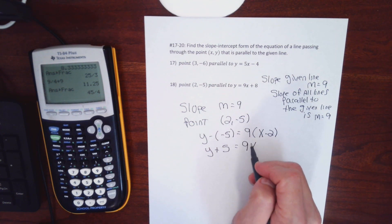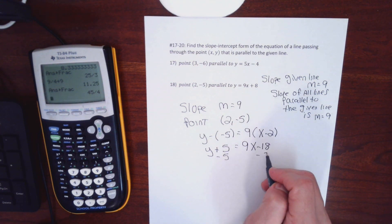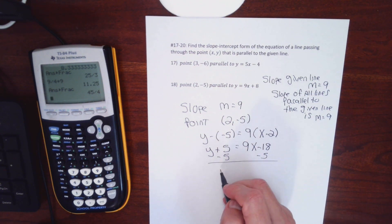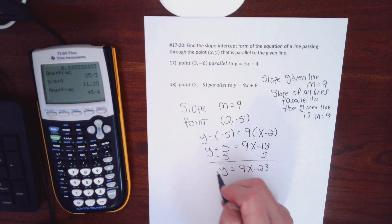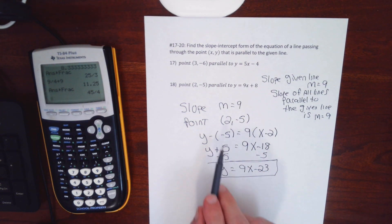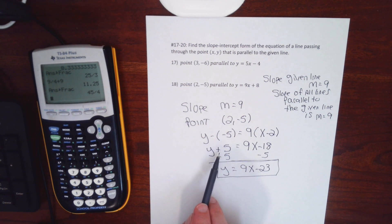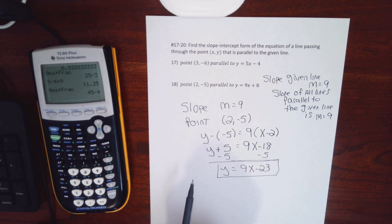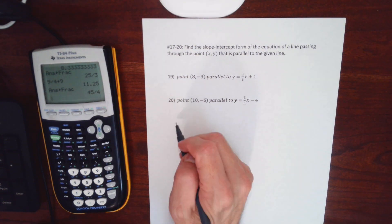I have the slope and the point, so I use point-slope: y minus negative 5 equals 9 times x minus 2. Making double negative positive, then clearing the parentheses and subtracting 5 from both sides gives the final equation for the parallel line.